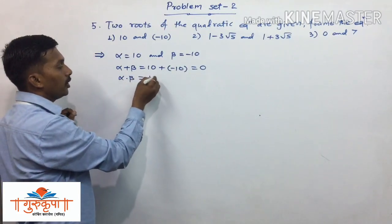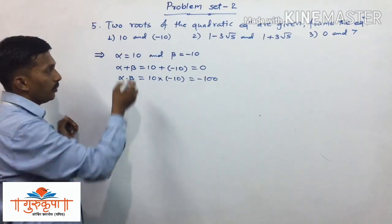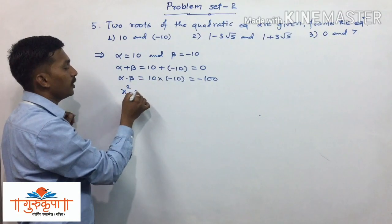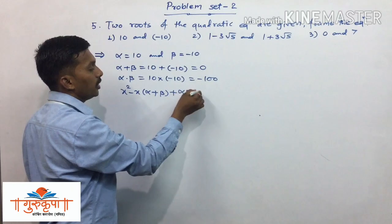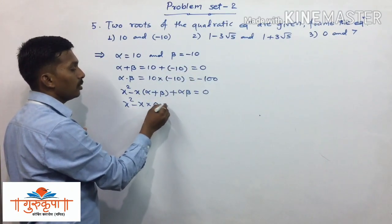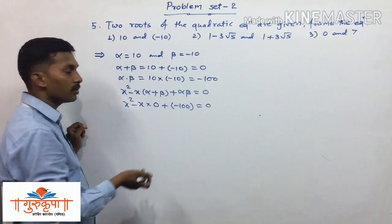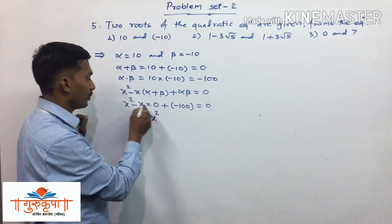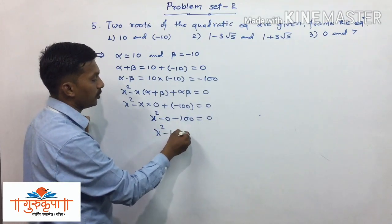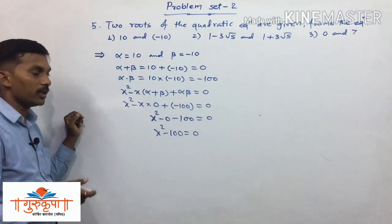Now we find alpha into beta, which equals 10 multiplied by minus 10, giving minus 100. To get the quadratic equation we use the formula: x squared minus x times (alpha plus beta) plus (alpha into beta) equals 0. Substituting the values: x squared minus x times 0, plus minus 100, equals 0. Since x times 0 is 0, we get x squared minus 100 equals 0.